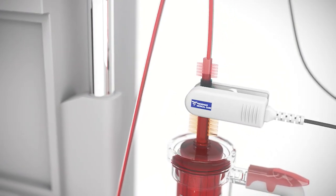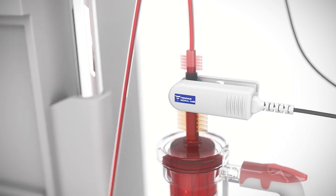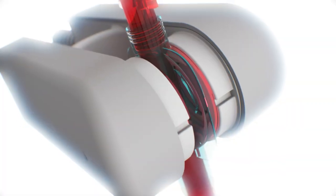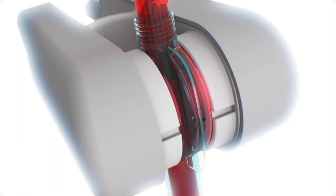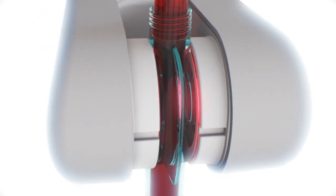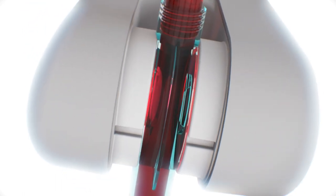During dialysis, a crit-line sensor clip is attached to a blood chamber between the arterial bloodline and the dialyzer. Optics within the sensor clip can emit multiple wavelengths of light, illuminating the blood as it passes through the chamber.